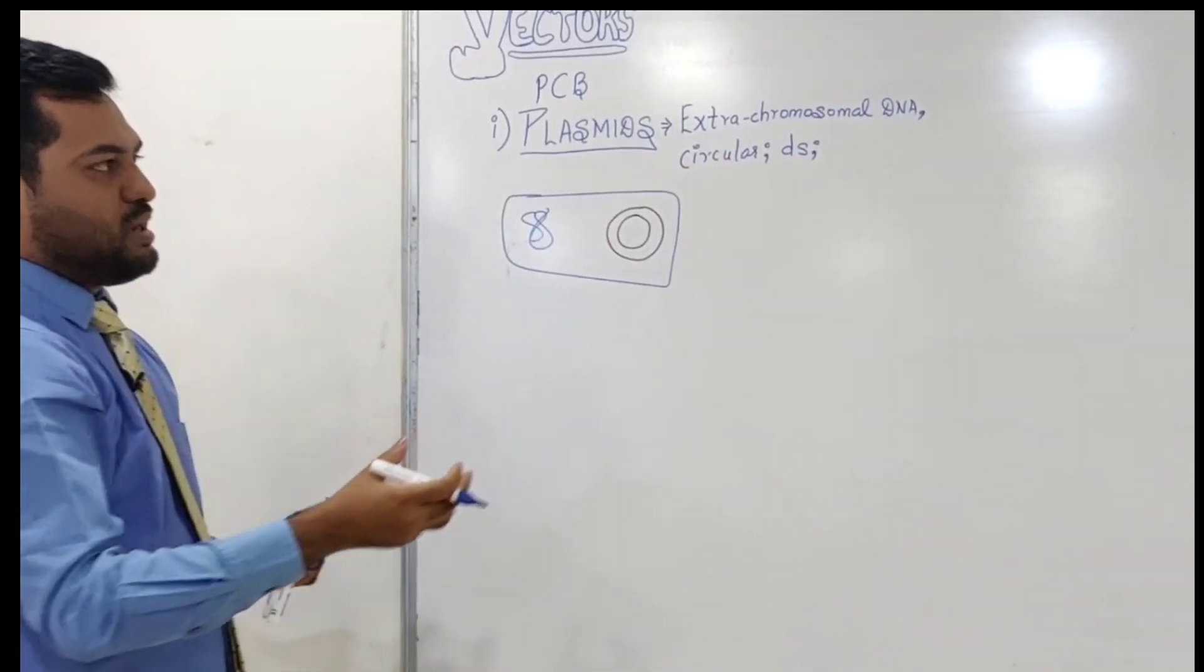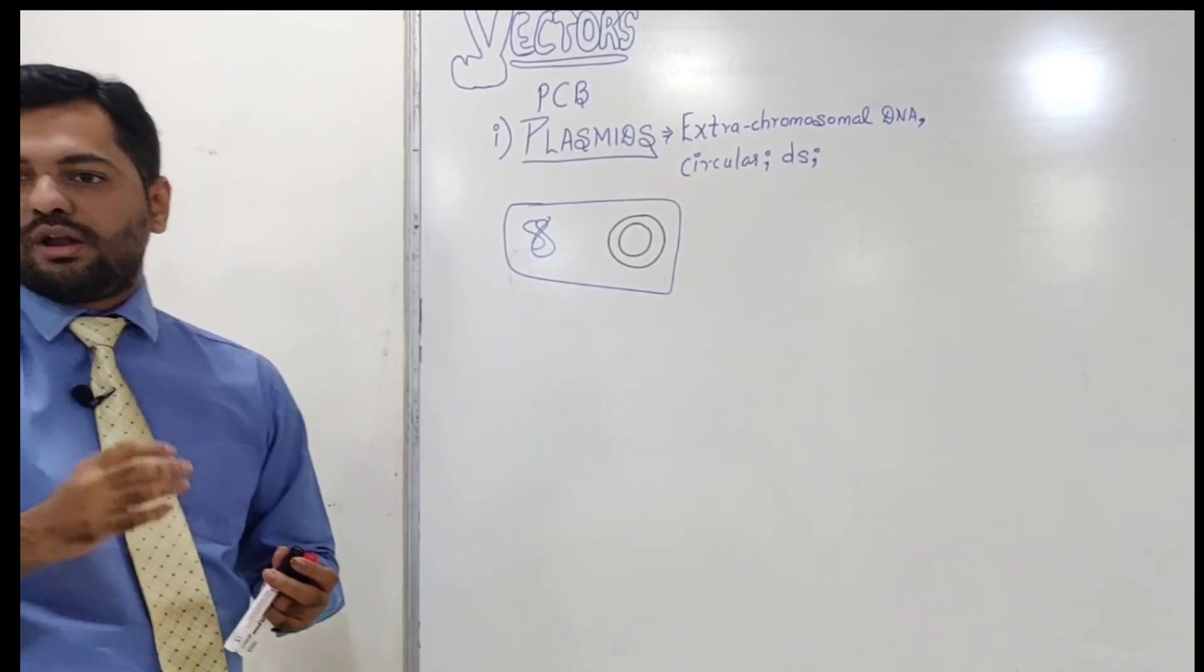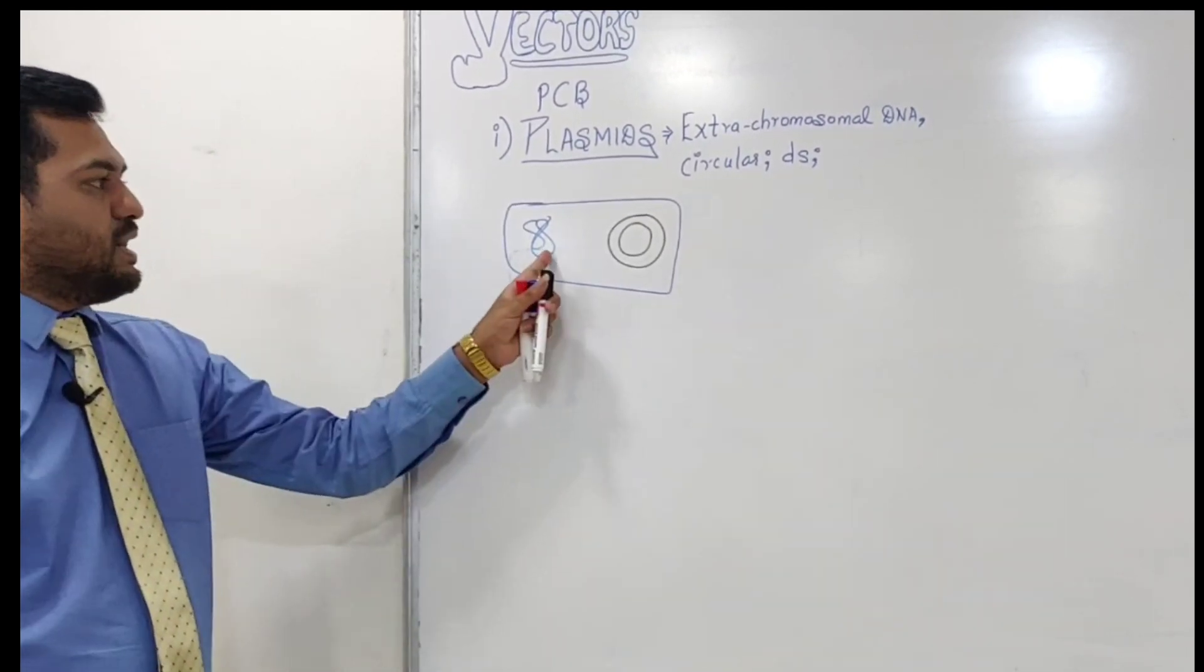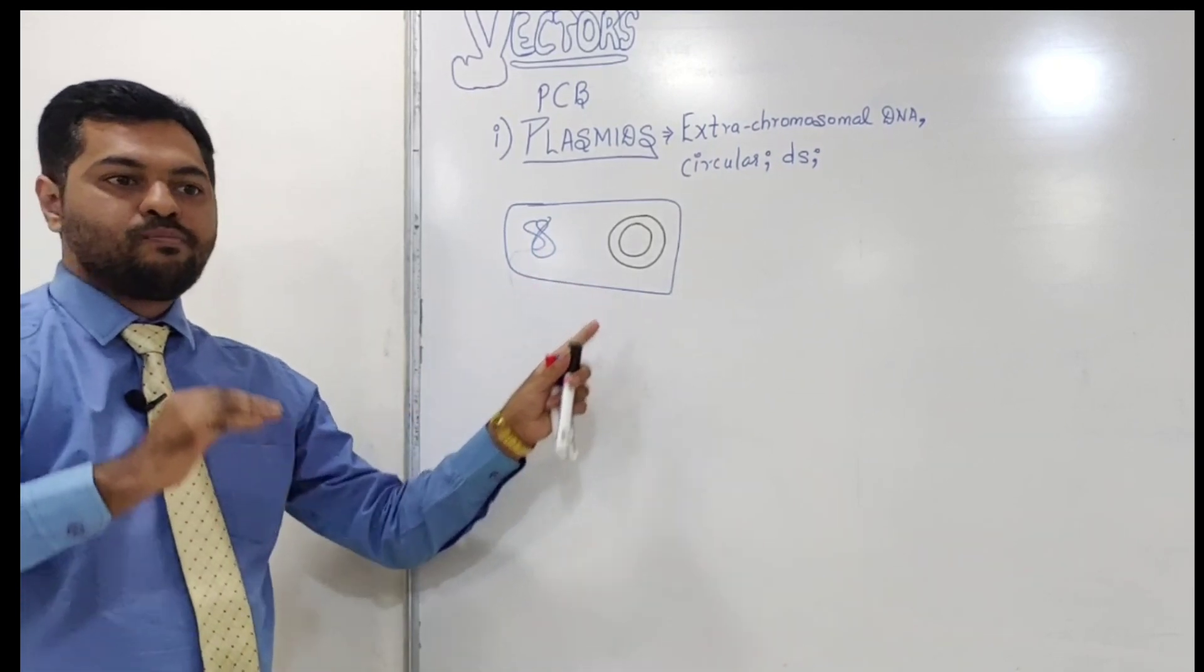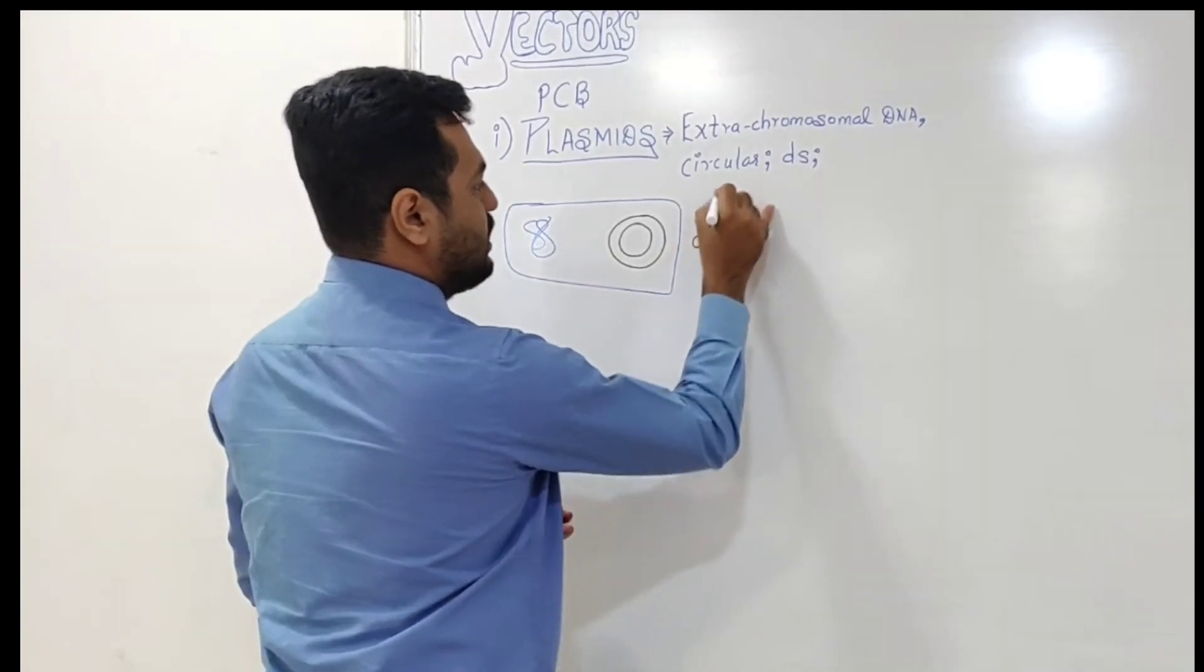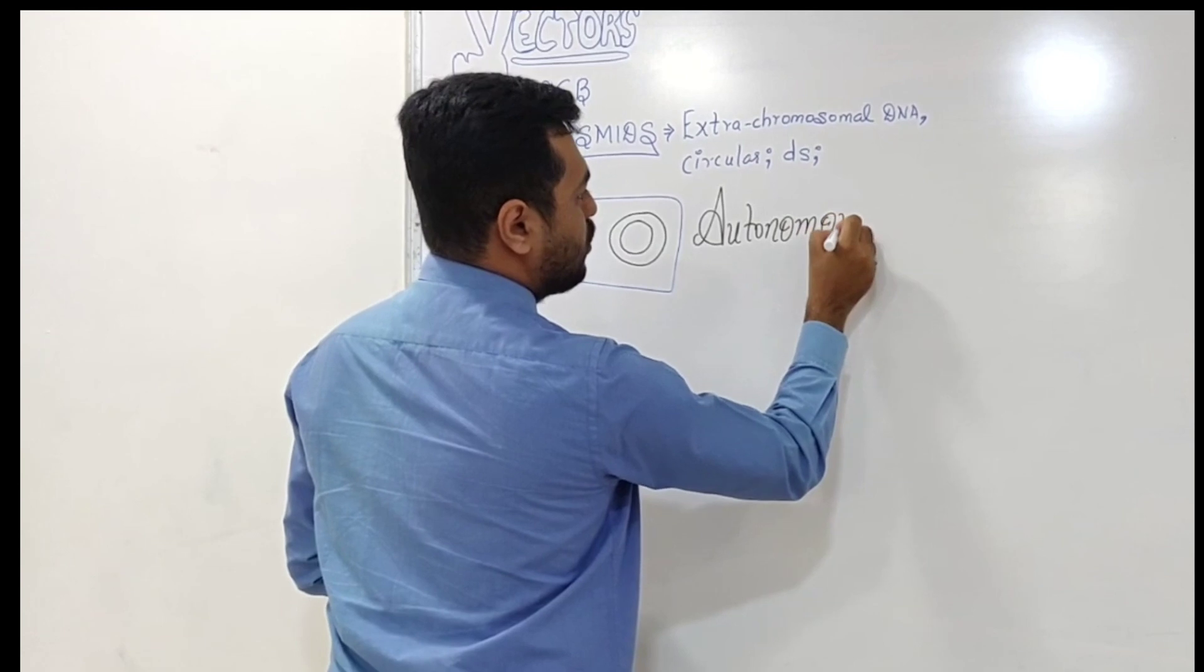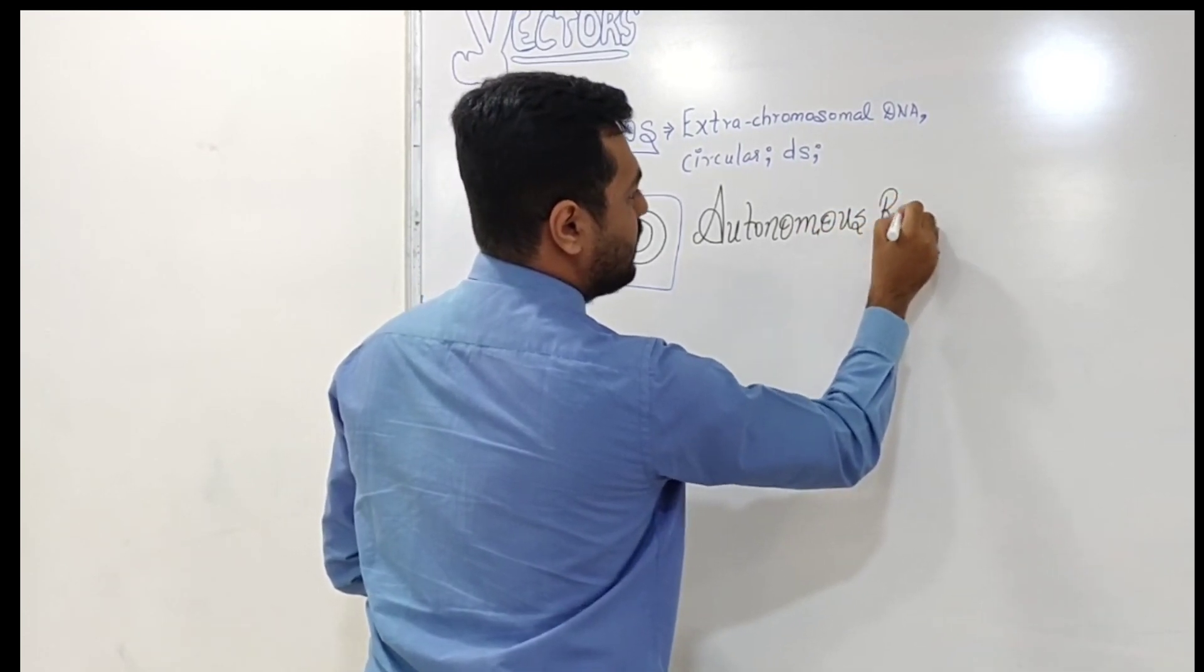The most important property of this plasmid is that it doesn't need permission from the main DNA. It can make its own copies, and we call this property autonomous replication.